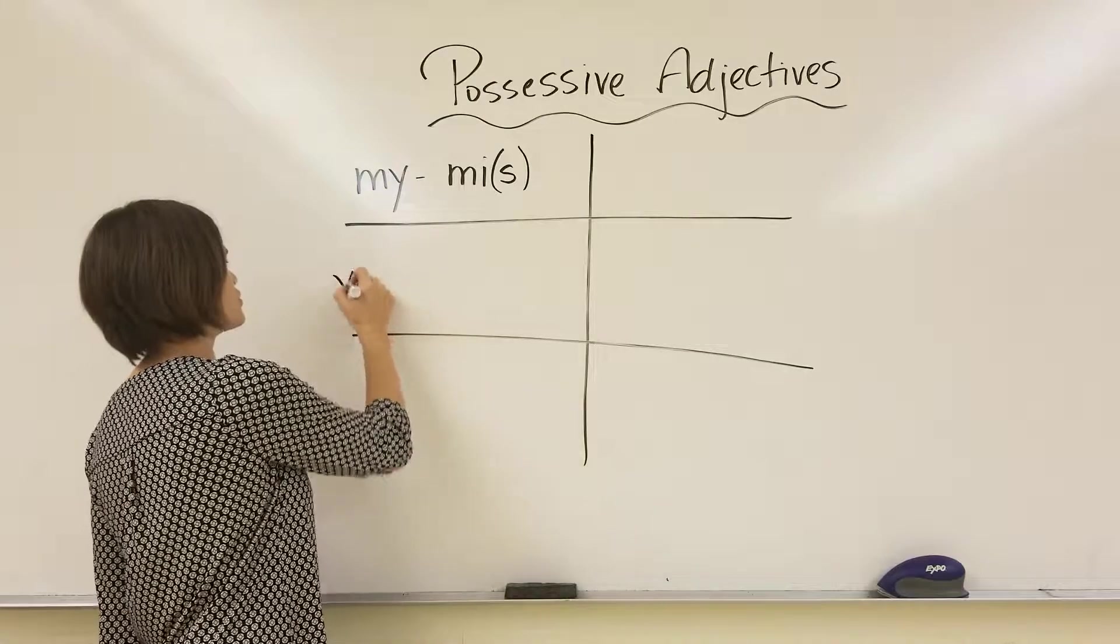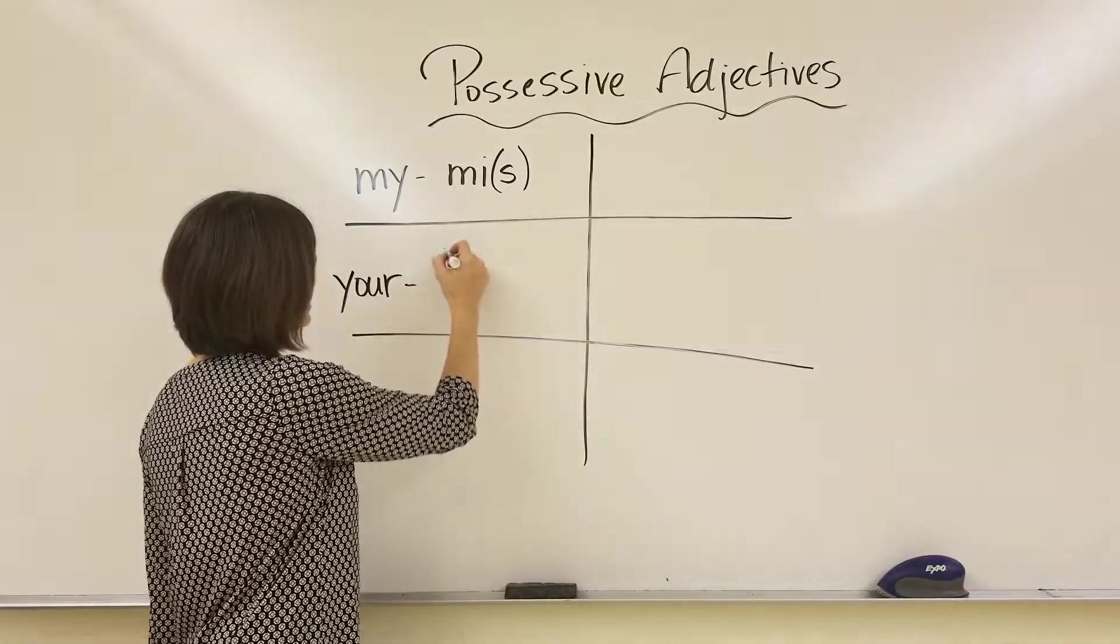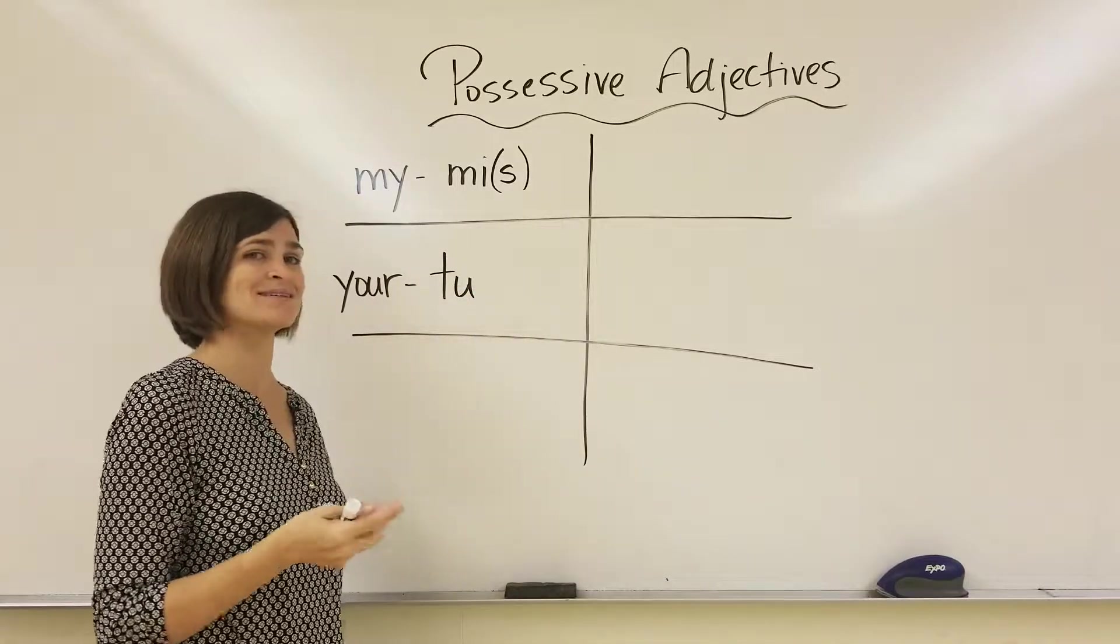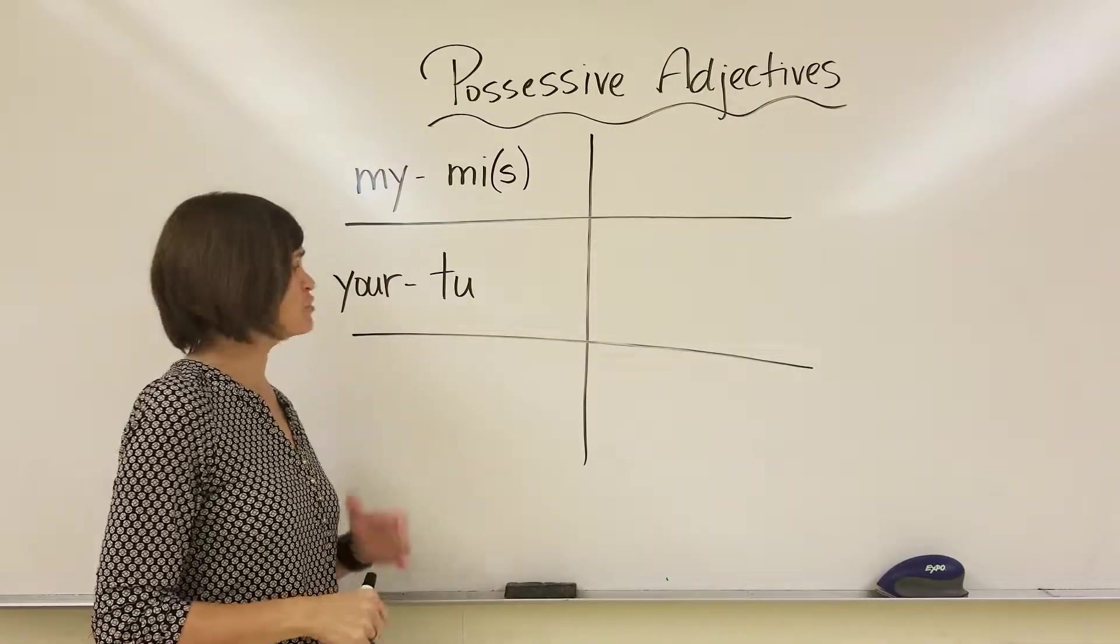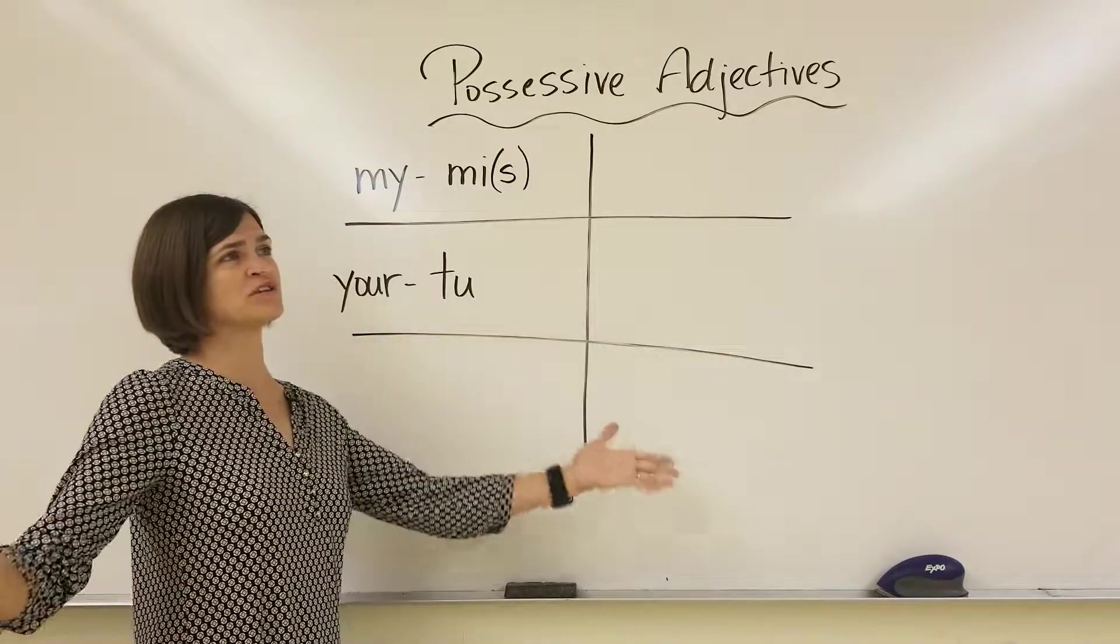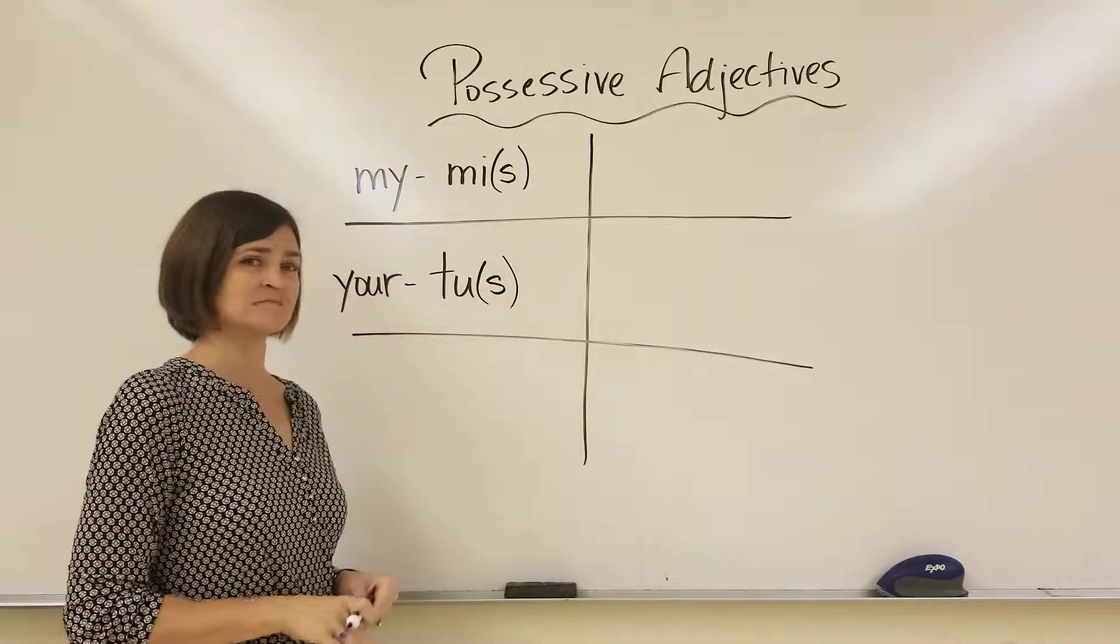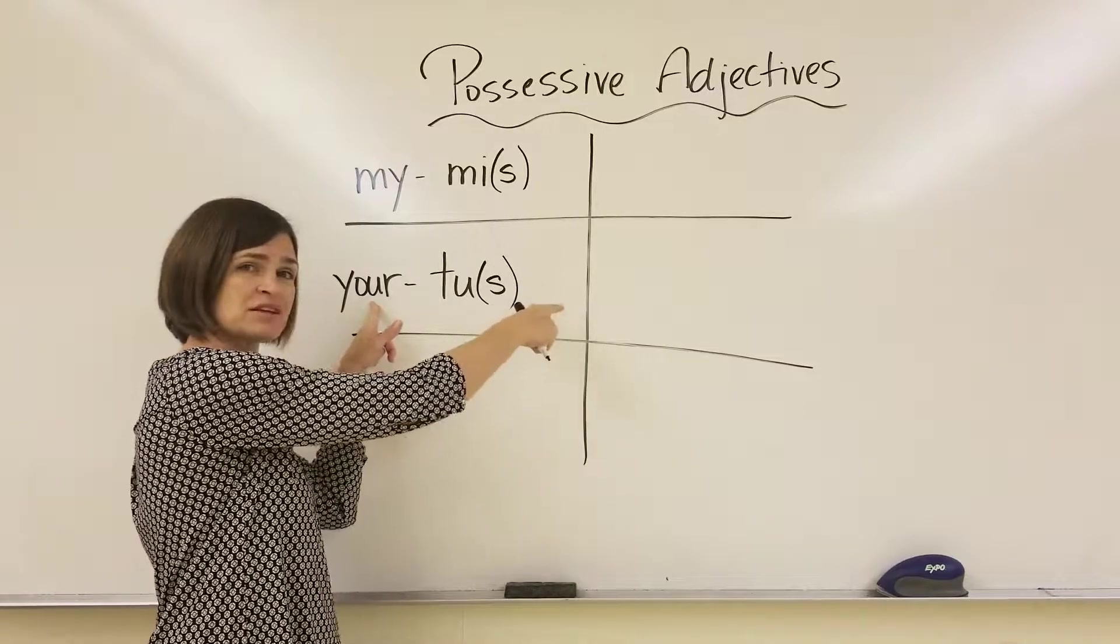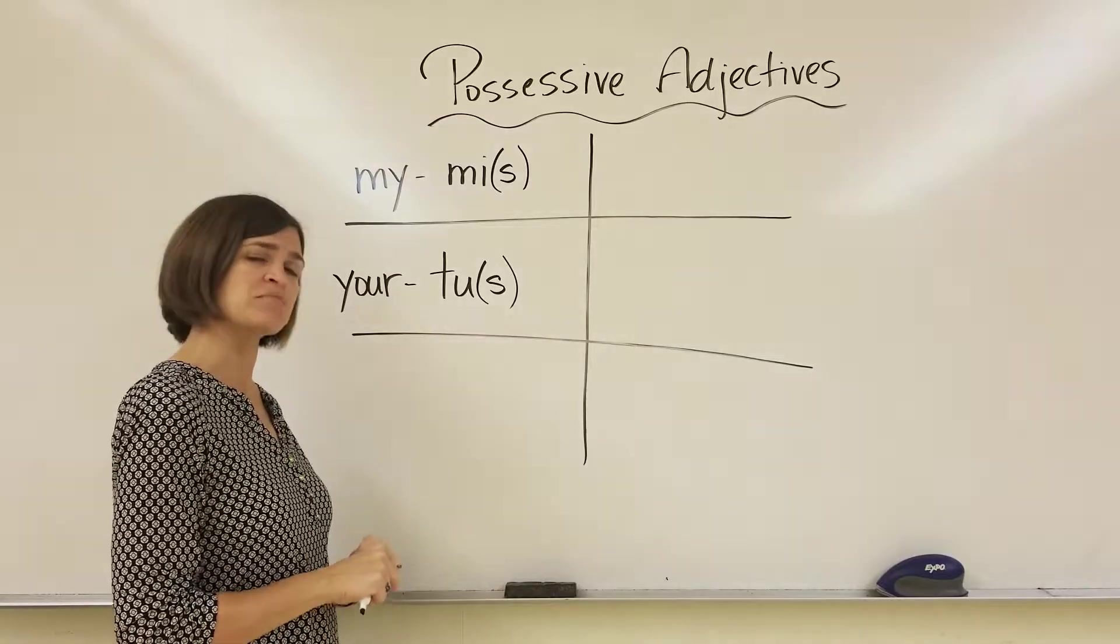Same thing's going to happen with the word your. Your is tu. This is without an accent. If it's tú with an accent, that means you. Without an accent, it means your. And once again, if it's your house, it's tu casa. But if you have a bunch of houses, they would be tus casas. This does not mean you are plural. It's the word that comes after this. It's the thing that is being possessed. It's based on the casas that it becomes plural.